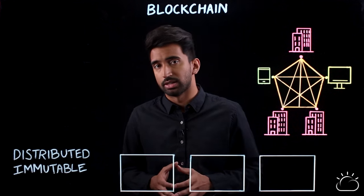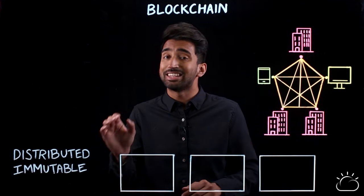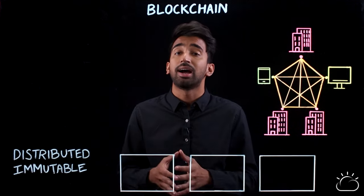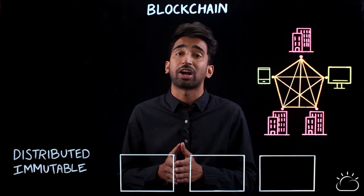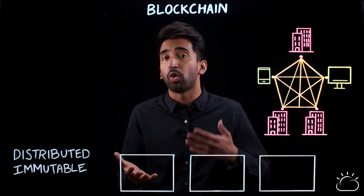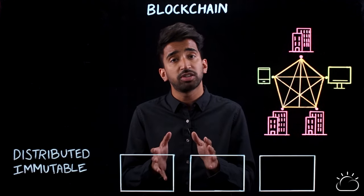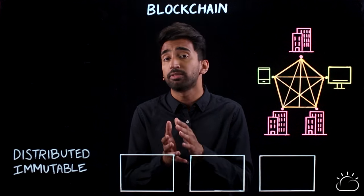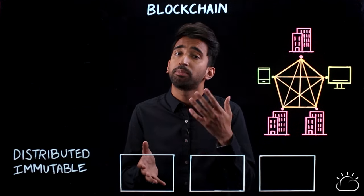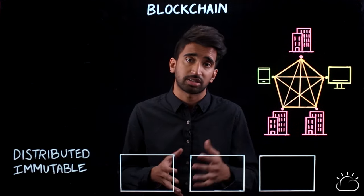We'll start with the definition. Blockchain is a distributed and immutable ledger, allowing you to track almost anything — tangible or intangible goods. Most of us are probably familiar with cryptocurrencies, where blockchain is used to track transactions.